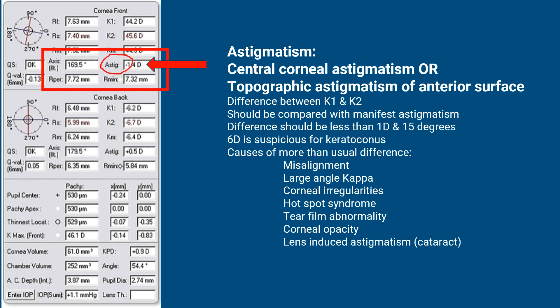This value is the topographic astigmatism of the anterior surface — it is the difference between K1 and K2. Remember, it should be compared with the manifest astigmatism. Here the astigmatism is minus 1.4, so your astigmatism in the glasses should be comparable. Causes of a greater-than-usual difference include misalignment, large angle Kappa, corneal irregularities, hot spot syndrome, tear film abnormalities, lens-induced astigmatism, and corneal opacity.